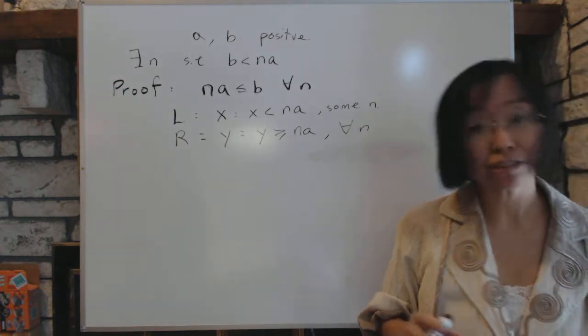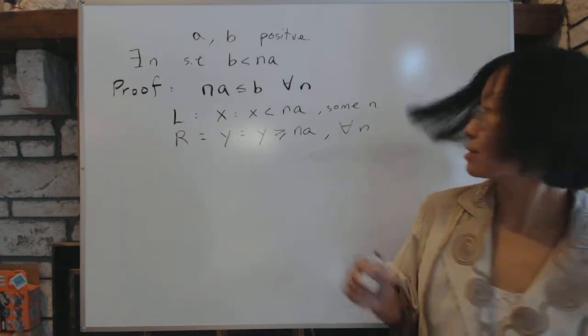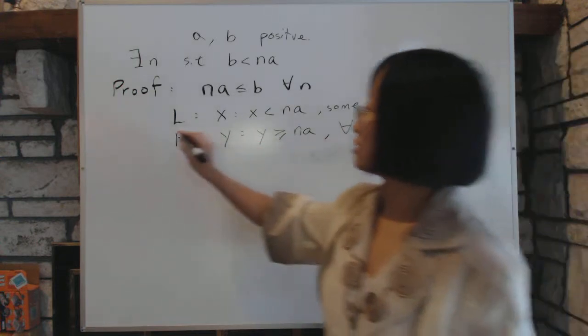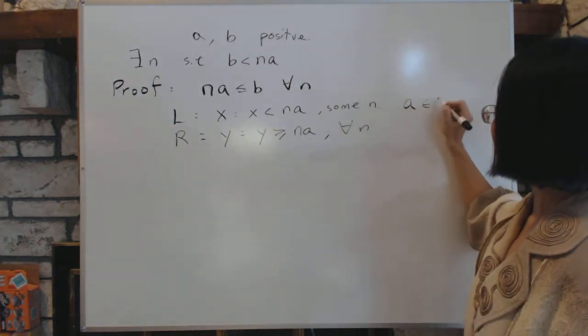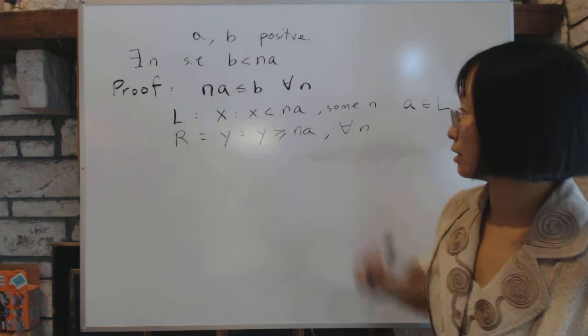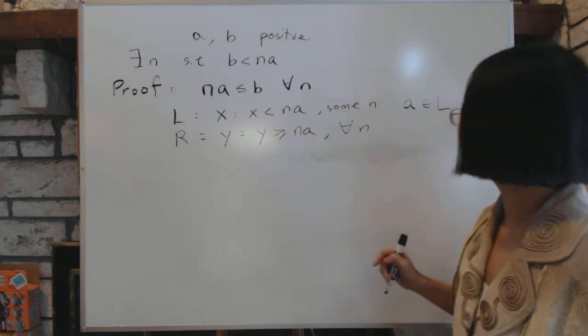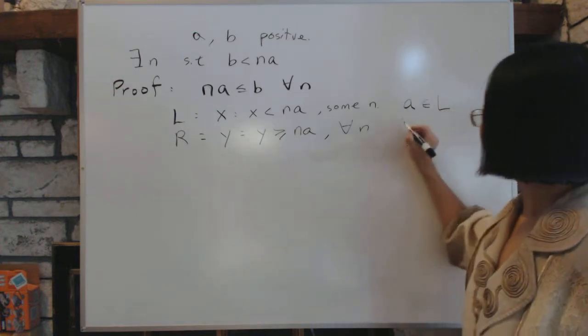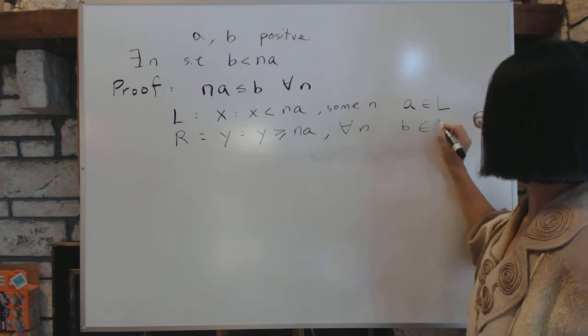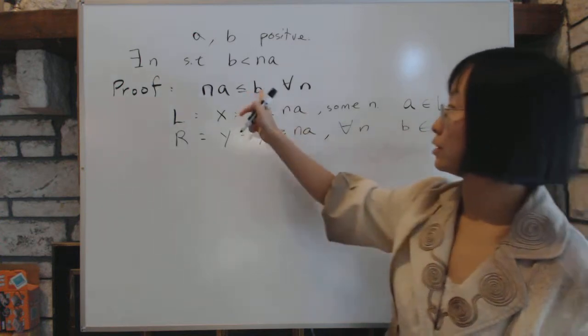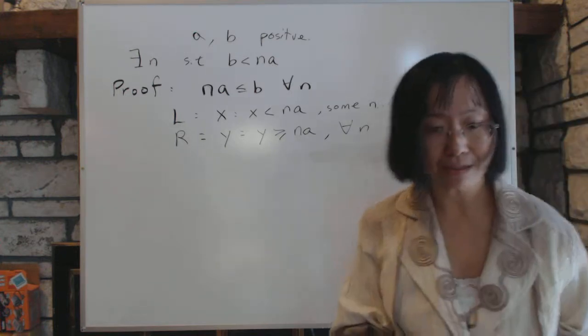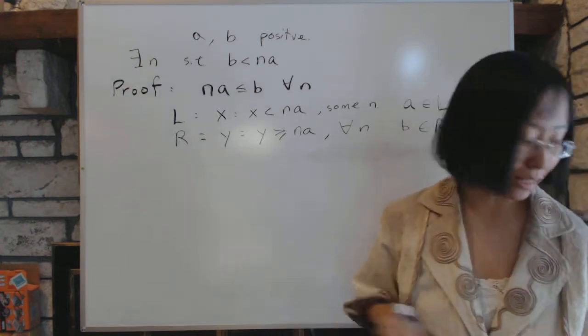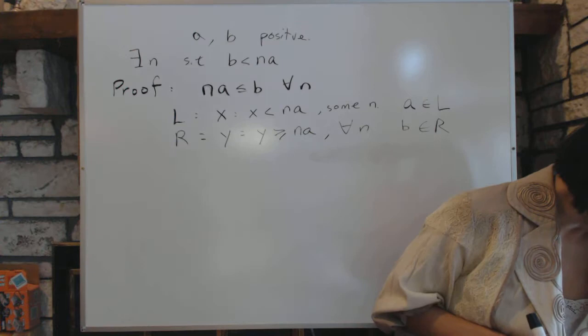Number two, we want to make sure that nothing's empty. Since we know that A is in L, because A is less than NA if you pick N equals 2, for example. And then of course, B is in R, and that's because of the supposition, because B is bigger than NA for all N. So B is in R, so we don't have any empty sets. So that's satisfied.